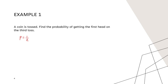The sample space is two and the probability of getting a head is one, so the probability of success p equals one half. The problem states getting the first head on the third toss, so n equals three. Therefore the probability of getting the first head on the third toss equals p times (1 minus p) raised to n minus one, which is one half times (1 minus one half) raised to three minus one.